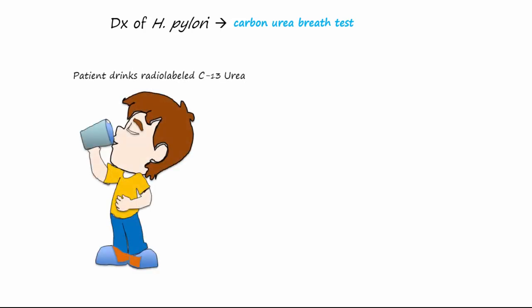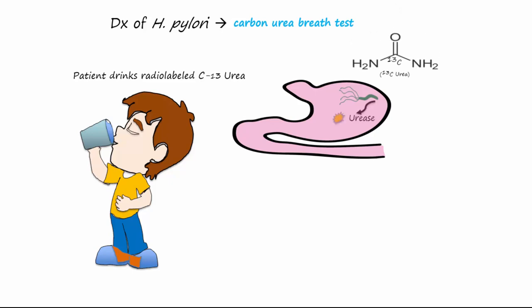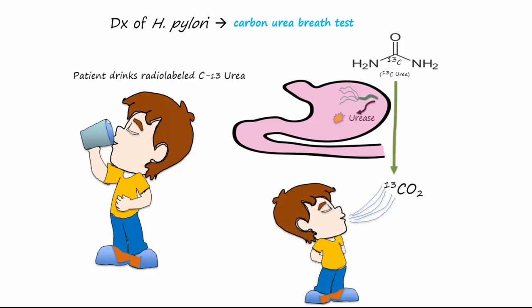One of the ways to diagnose H. pylori is by using the carbon urea breath test. For this test, the patient first drinks radio-labeled carbon-13 urea. The H. pylori in the digestive tract will then break down the urea using urease, breaking it down into carbon dioxide that now has carbon-13 as the carbon atom for the CO2 molecule. This breathed-off radio-labeled CO2 can be detected using special breath analyzers.